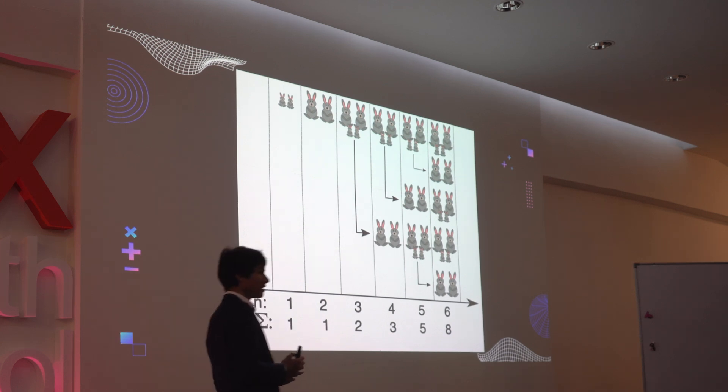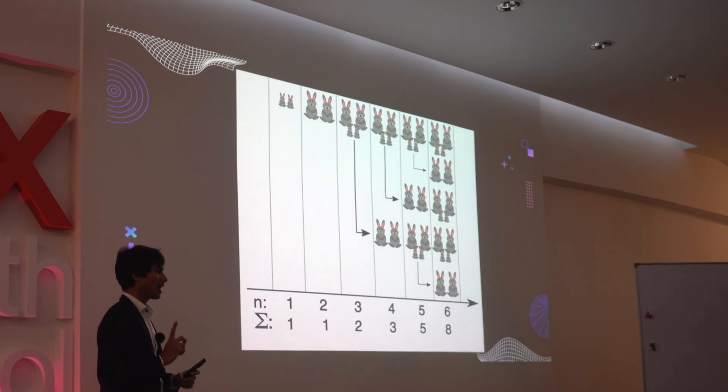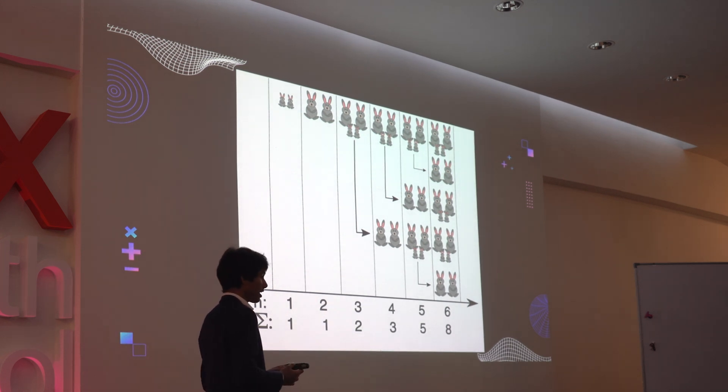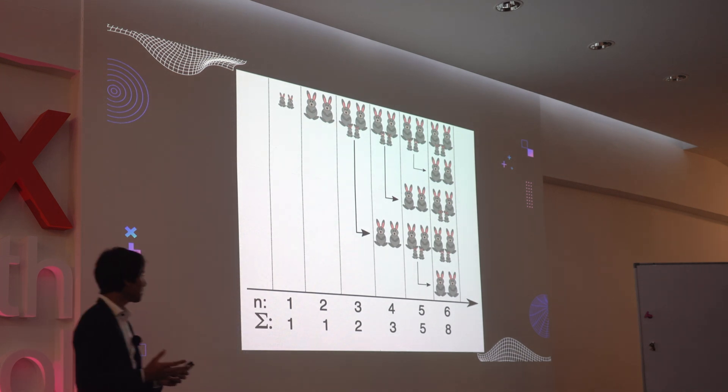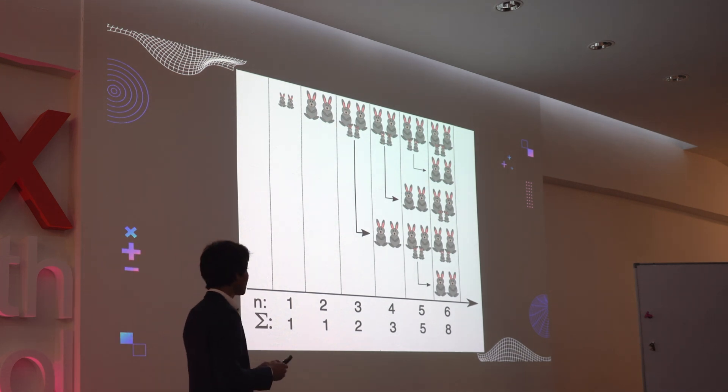And the problem that he stated in his book was, with one pair at the beginning of the year, after one year, how many pairs of rabbits would there actually be? The answer to that, if we dive down into this rabbit hole of Fibonacci numbers, would be 144.